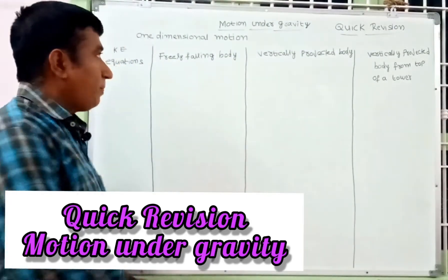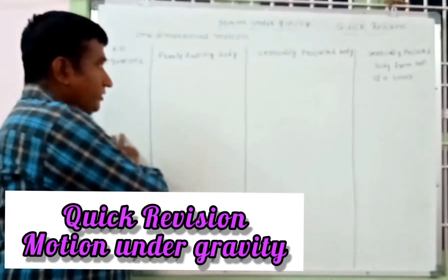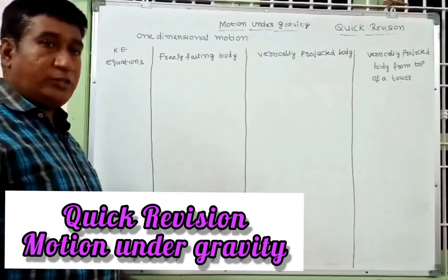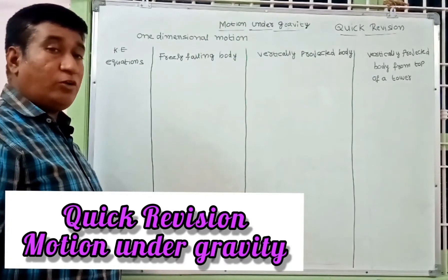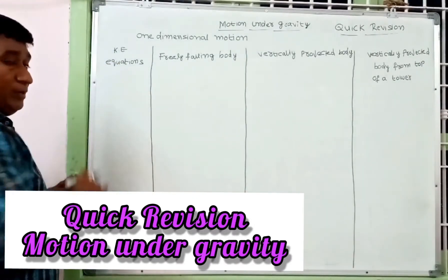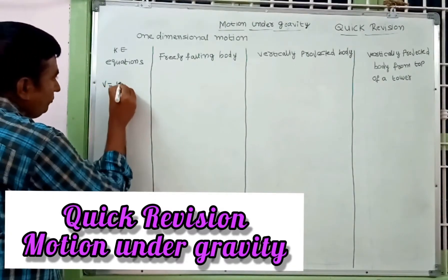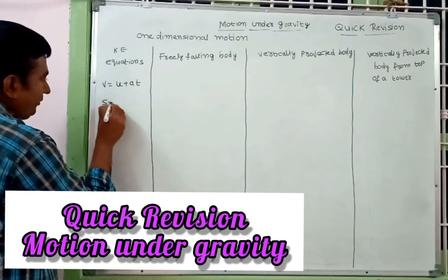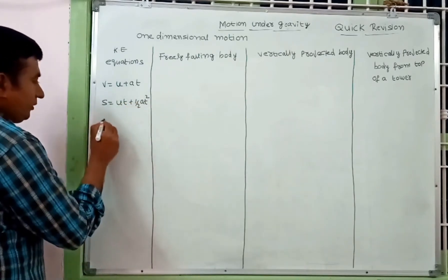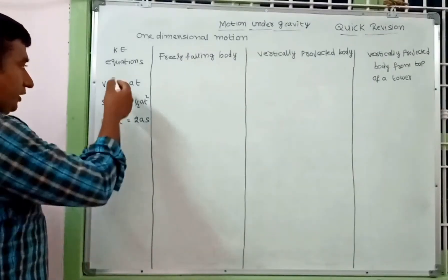Good morning students. Motion under gravity — quick revision. In previous classes we have discussed kinematic equations, freely falling body, vertically projected body, and vertically projected body from top of a tower. For competitive exams, how can we remember this for quick revision? Based on the three kinematic equations: v = u + at, s = ut + ½at², and v² - u² = 2as.